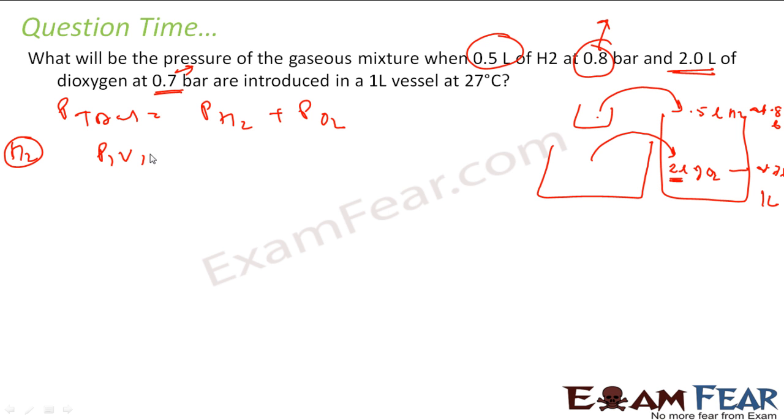So, P1V1 is equal to P2V2 because other things are same, my temperature is constant. So, the pressure of hydrogen earlier was 0.8 bar, the volume was 0.5 liter, what is the new pressure? We have to find P of H2, what is the new volume? 1 liter. So if we solve this, we get P of hydrogen as 0.4 bar.